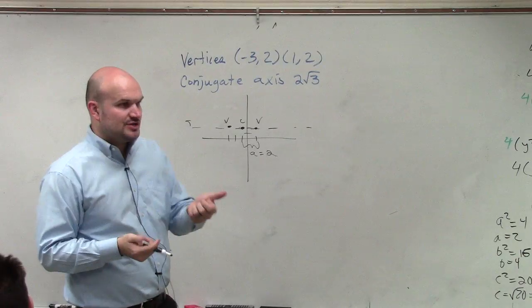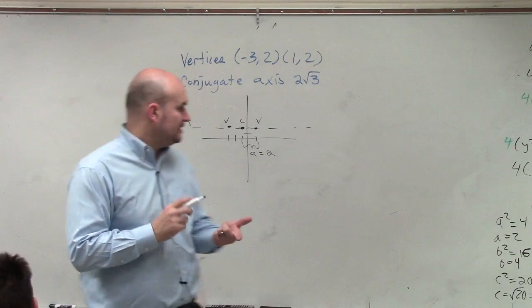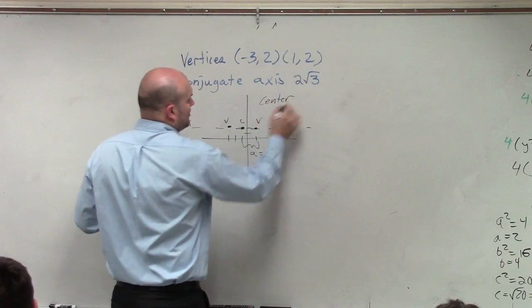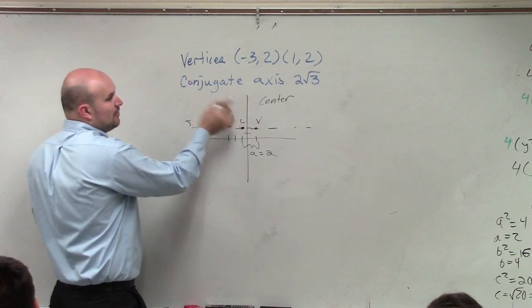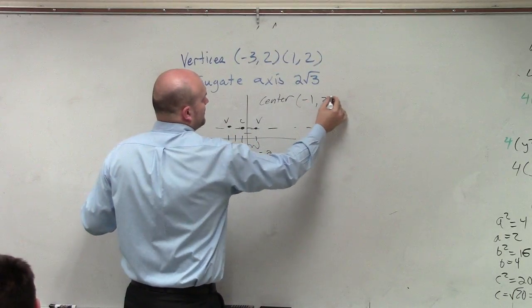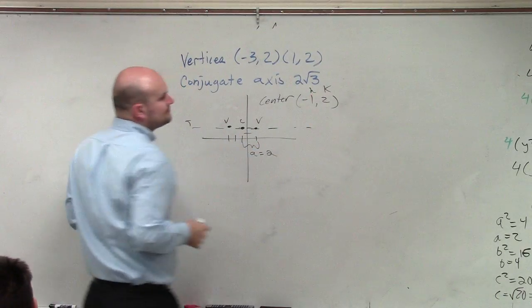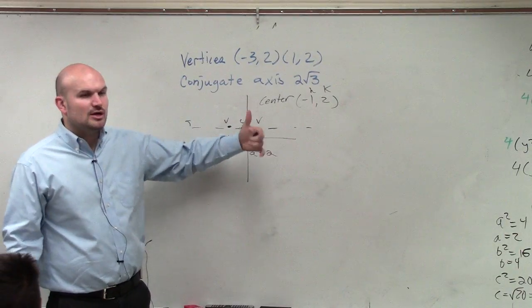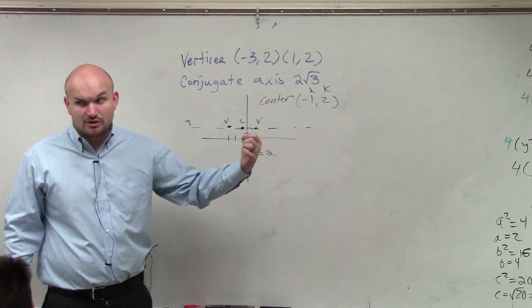So remember, for the equation of a hyperbola, we need to know the center, which in this case we figured out as the midpoint of our two vertices, which is (-1, 2). Remember, that's your h and that's your k. We know a equals 2, because that's the distance from your center to your vertices. But we also need to figure out what b is, correct?